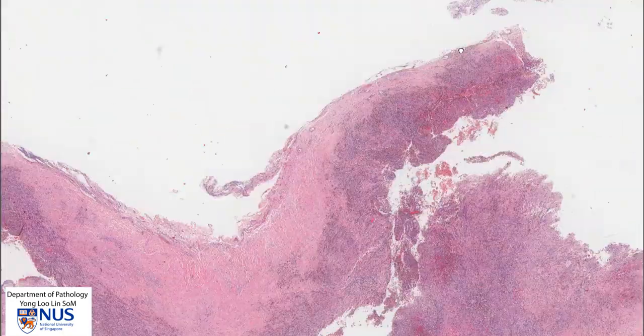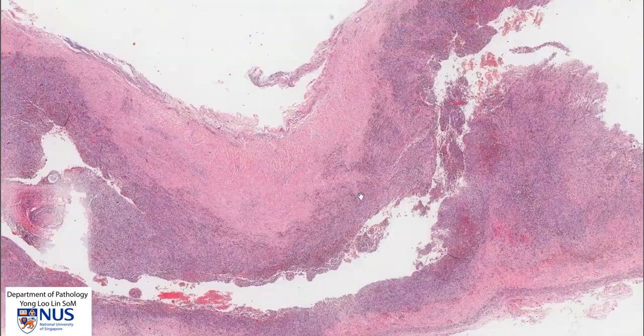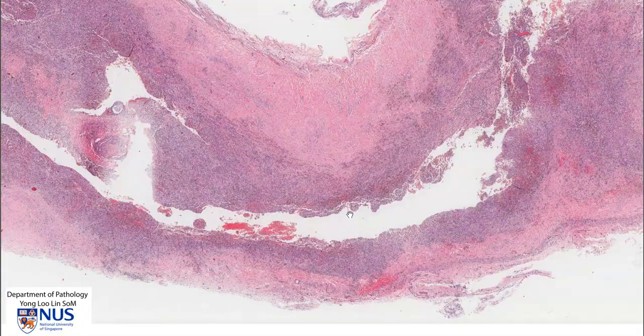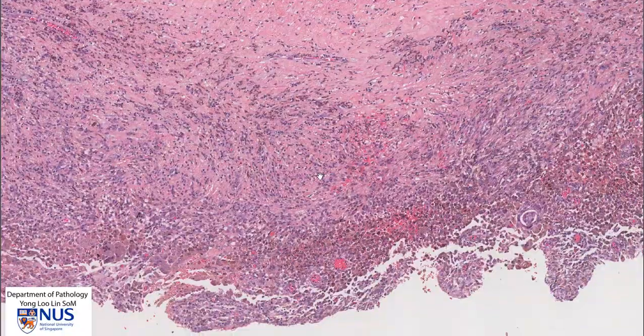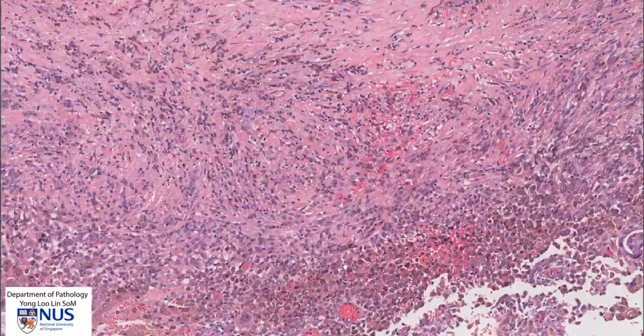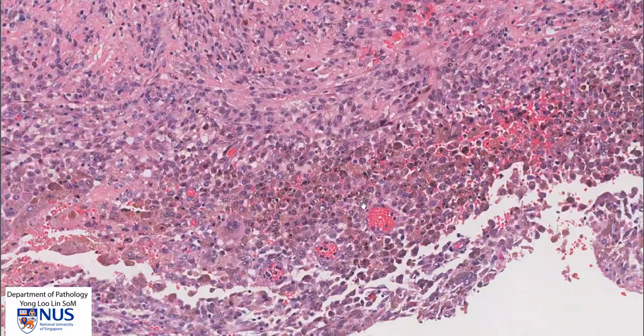If we look at the second piece of the cyst wall, we can see a similar picture of numerous hemosiderophages and some stromal cells in between.